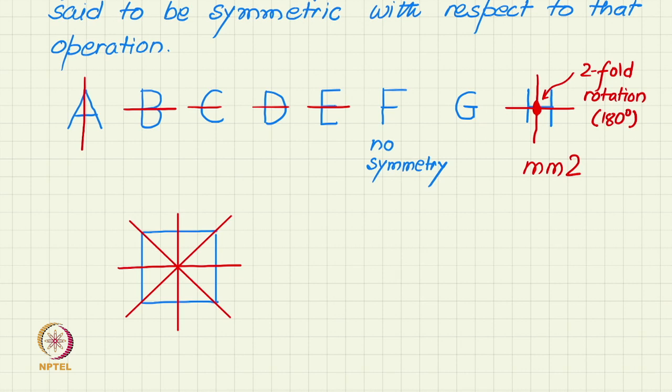And then, apart from this reflection symmetry, another geometric operation which brings it into self-coincidence is a 90-degree rotation about the center. That is called a four-fold axis. We will discuss these in more detail. Here, just as an example and introduction, I am giving four-fold axis, which means self-coincidence after 90-degree rotation.